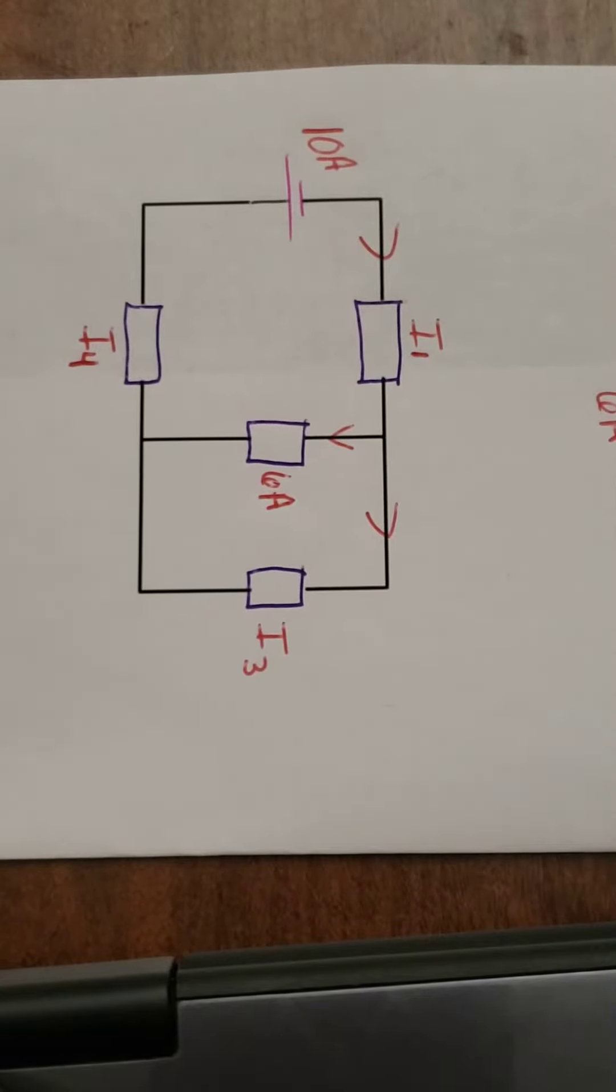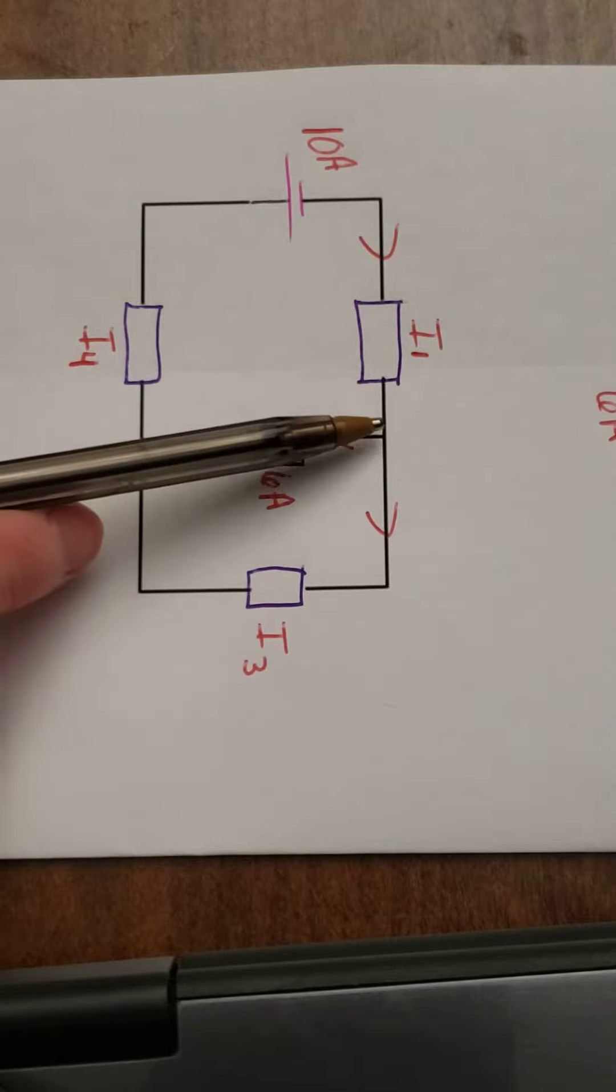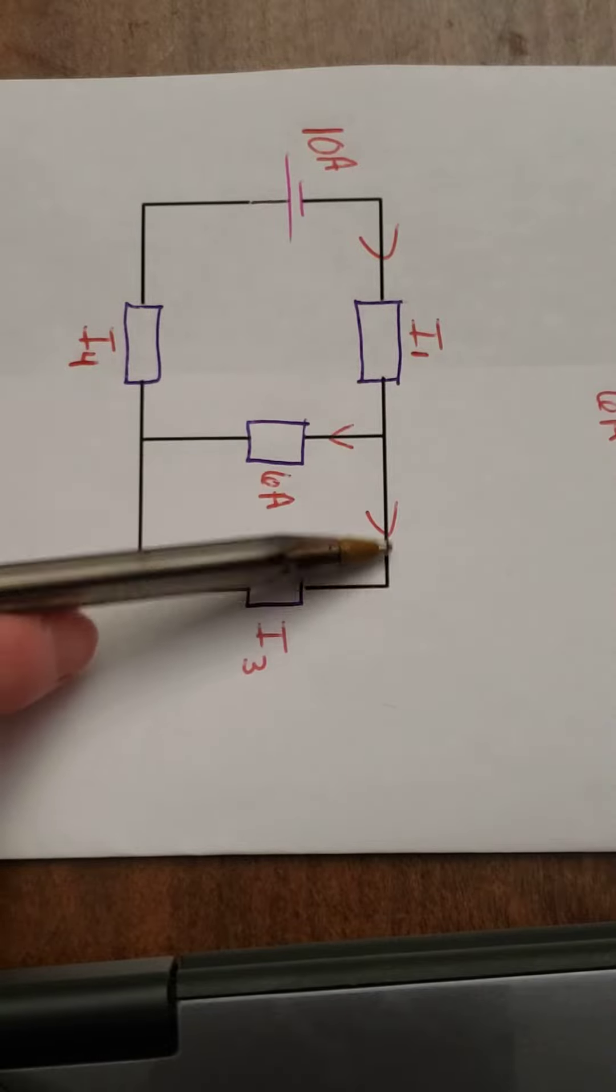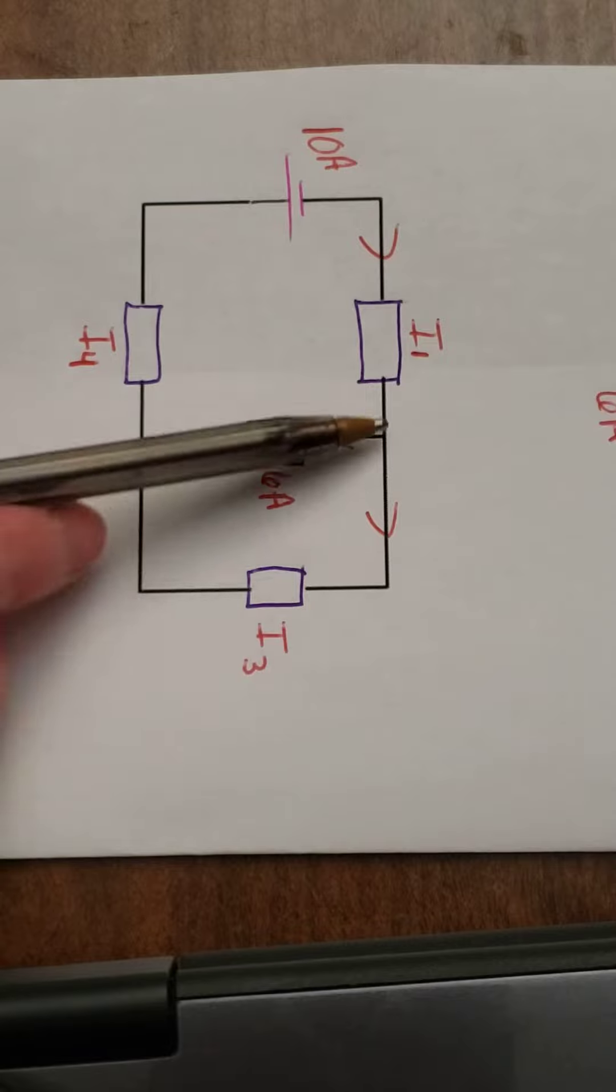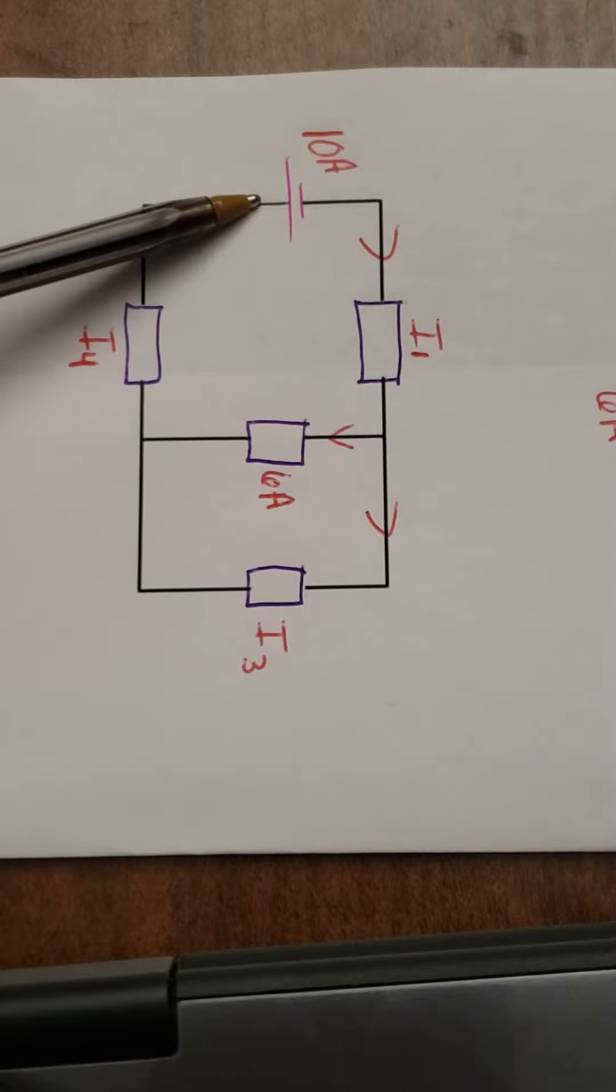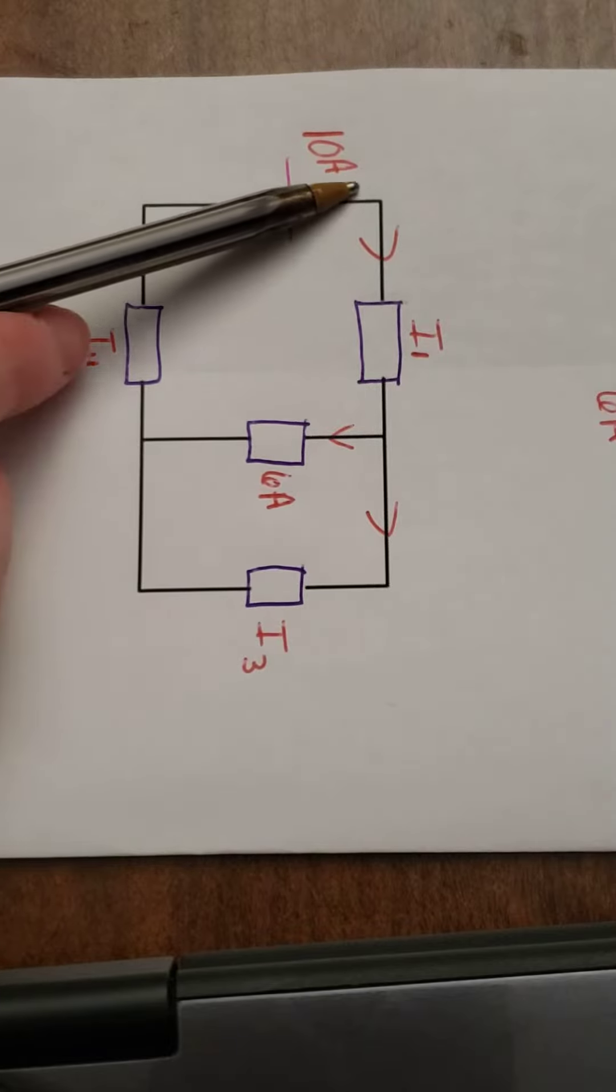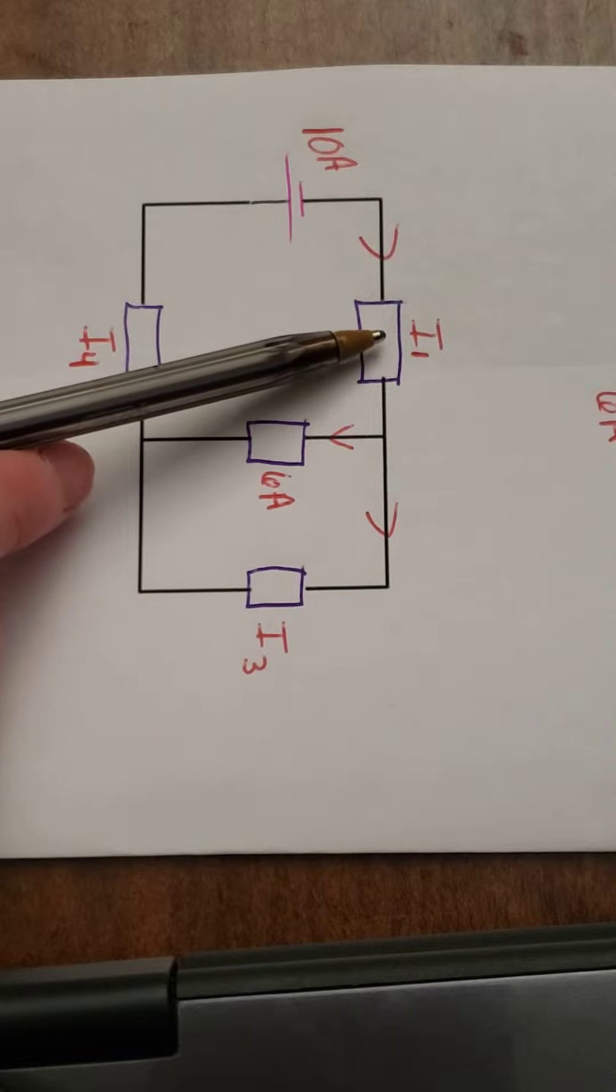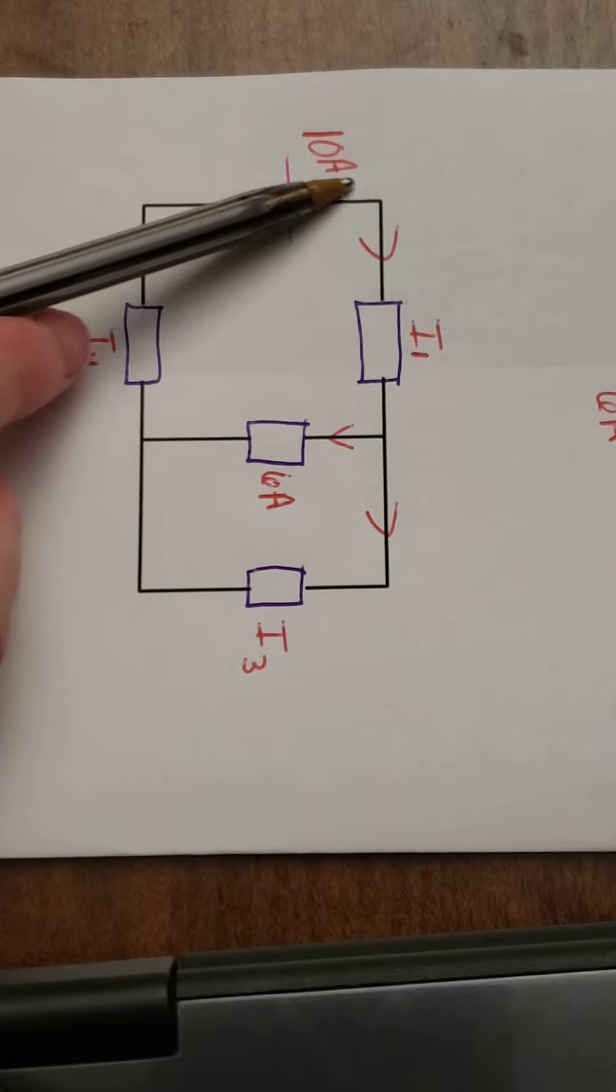This one's a little more complicated. I see there's a parallel part here because there's a branch. I could go down or over. However, when I come out of the battery, this resistor is connected in series. There's only one path here.